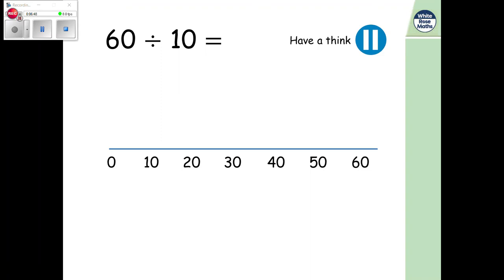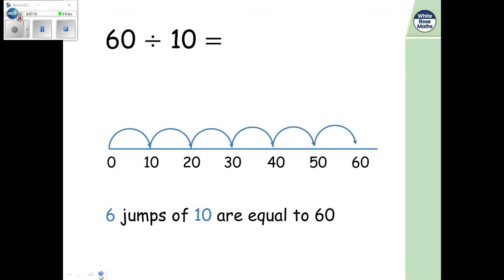Again, let's do our 10 times tables. Can you find out how many jumps she will need? What is 60 divided by 10? Have a pause. So hopefully you are very confident in counting in your 10s. Let's do it together all the way until we get to 60. 10, 20, 30, 40, 50, 60. We've done one, two, three, four, five, six jumps. So six jumps of 10 are equal to 60.